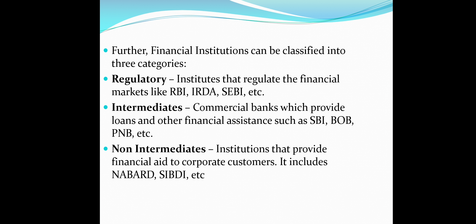Further, financial institutions can be classified into three categories. First, regulatory institutions that regulate the financial market, such as RBI, IRDA, and SEBI. Second, intermediates such as commercial banks that provide loans and other financial services, for example SBI, Bank of Baroda, and Punjab National Bank.